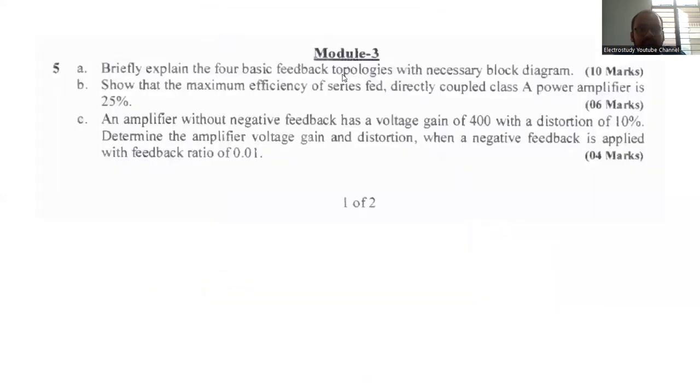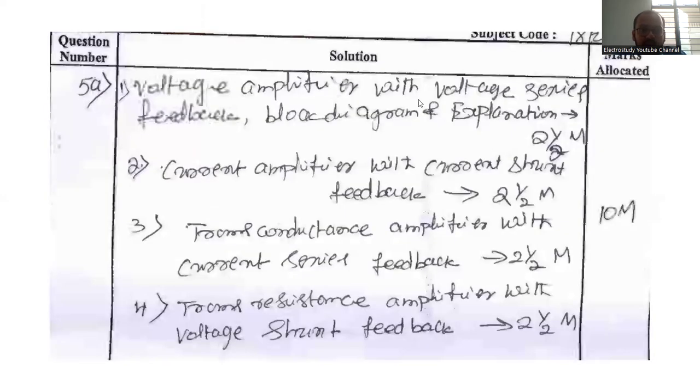And now I'll be moving on to question number 5A. Briefly explain the four basic feedback topologies with the block diagram. Voltage amplifier with the voltage series feedback, diagram is mandatory. Current amplifier with the current shunt feedback. Then the conductance amplifier with the current series feedback. Two and half marks.